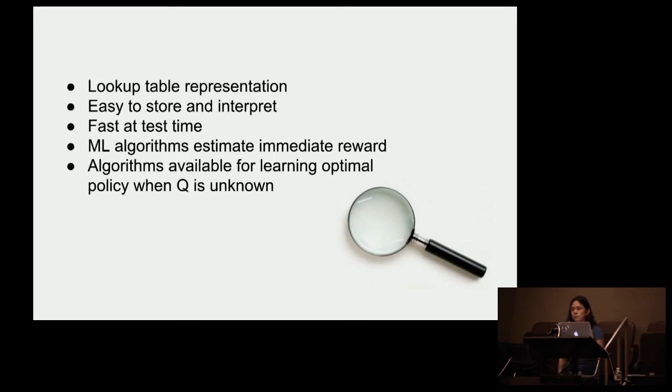In the case of what we were working on, we used machine learning algorithms to estimate these immediate rewards, right? These little grid values, we used machine learning algorithms for regression to estimate reward. And then there are also algorithms available to cut down on the number of iterations and for learning of the optimal policy when you don't know these Q values.